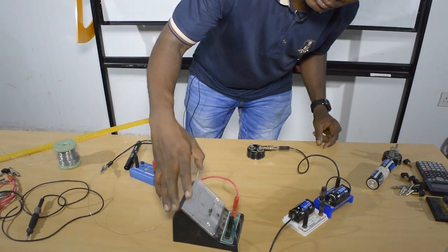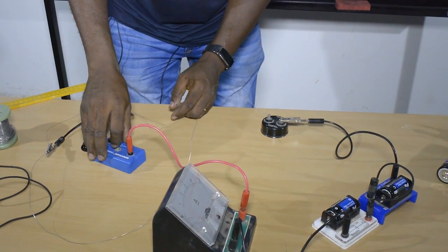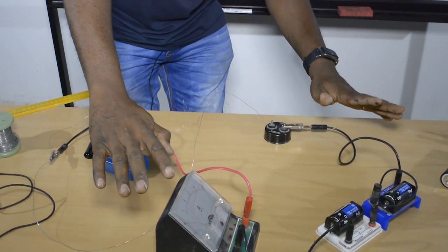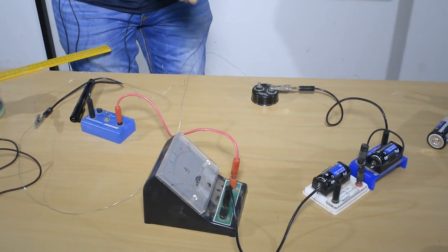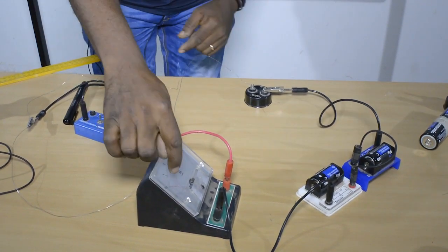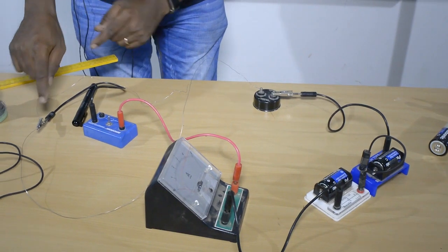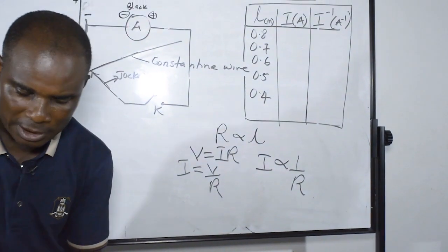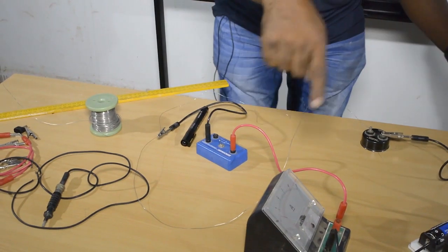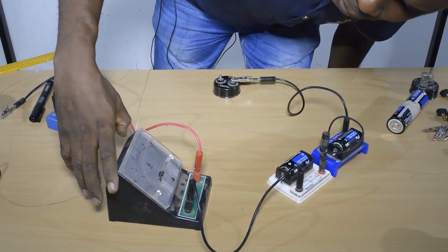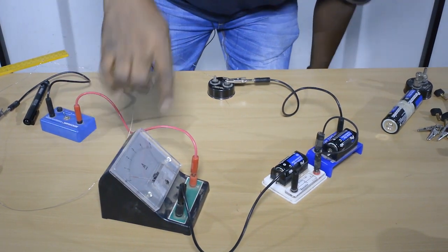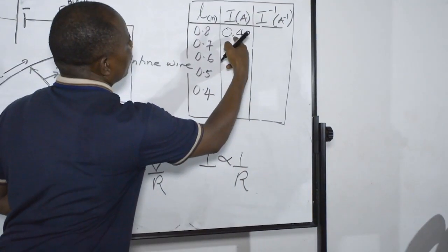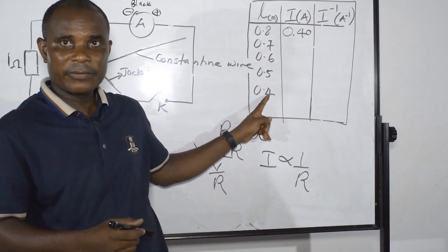The current is 0.3. I have not switched on the key yet, so that is a zero reading. Now I'll read the current when the length of the constantan wire is 0.8 meters. I close the key and I get a reading — it is 0.4 amps. So I have 0.4 amps here. Now I'm bringing the length down to 40 centimeters.